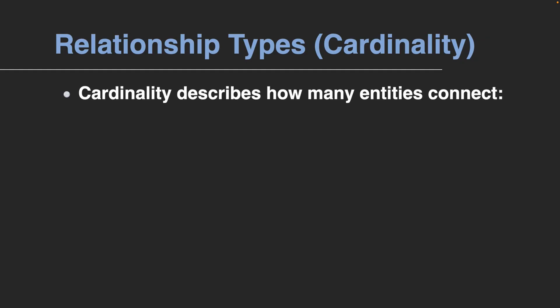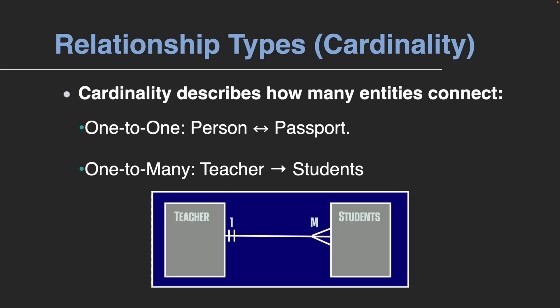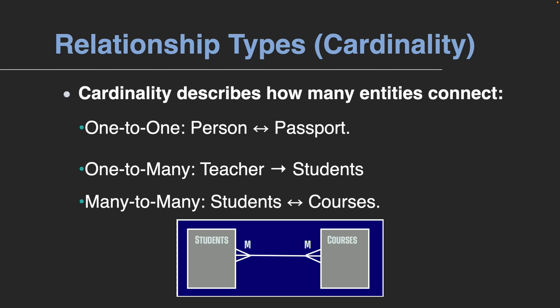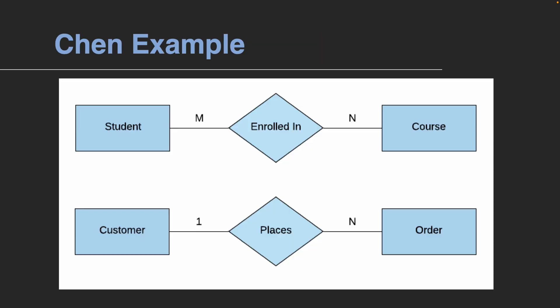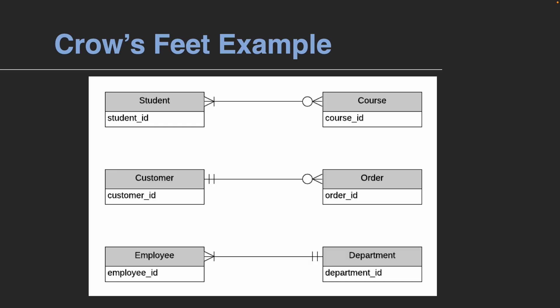Cardinality describes how many entities can be connected in a relationship. One-to-one means a single entity is linked to only one other entity, like one person with one passport. One-to-many means one entity can link to many others, such as a teacher having many students. Many-to-many means both sides can connect to many, like students and courses. In Chen notation, these are labeled with numbers near the line. In Crow's Foot notation, we use symbols — a straight line for one and a three-pronged fork, or crow's foot, for many.